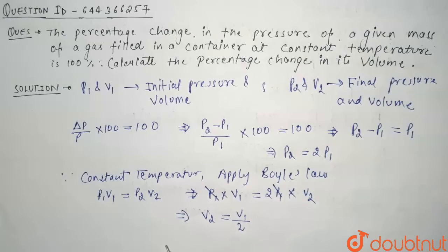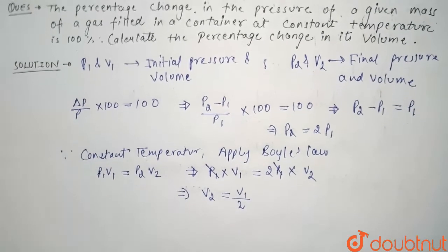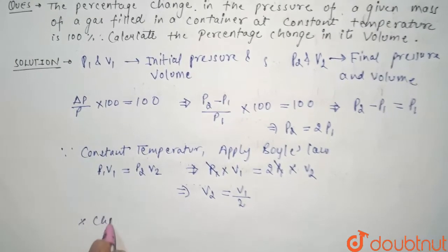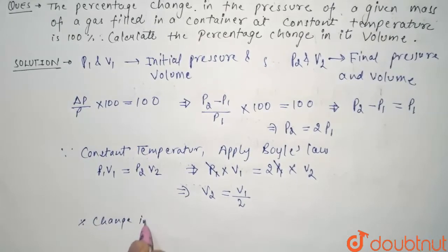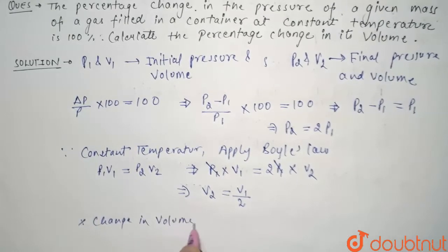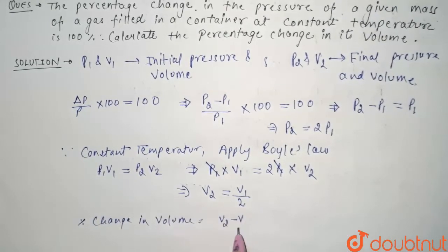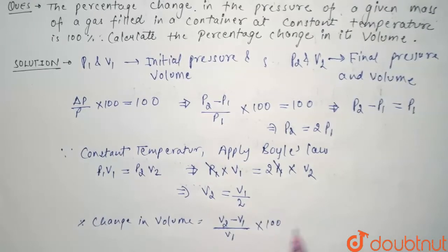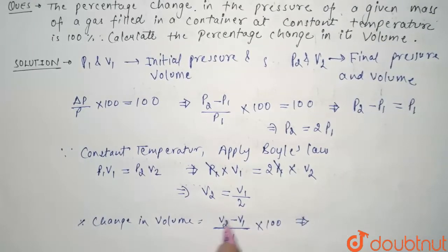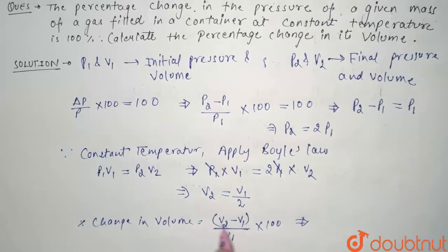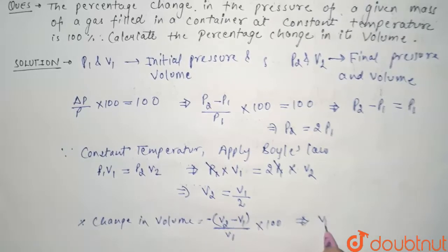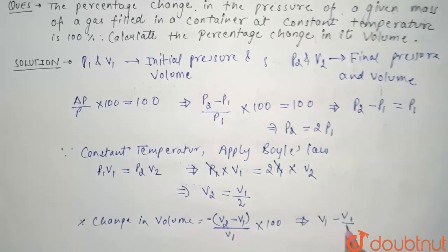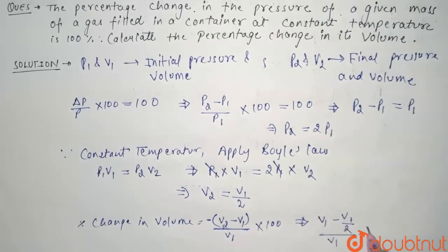Now guys, we have to find the percentage change in volume. So percentage change in volume should be equal to V2 minus V1 divided by V1 into 100. Or we can say it V1 minus V2 with negative sign. So V1 minus V2 will be V1 minus V1 by 2, that is V1 by 2 divided by V1 into 100.